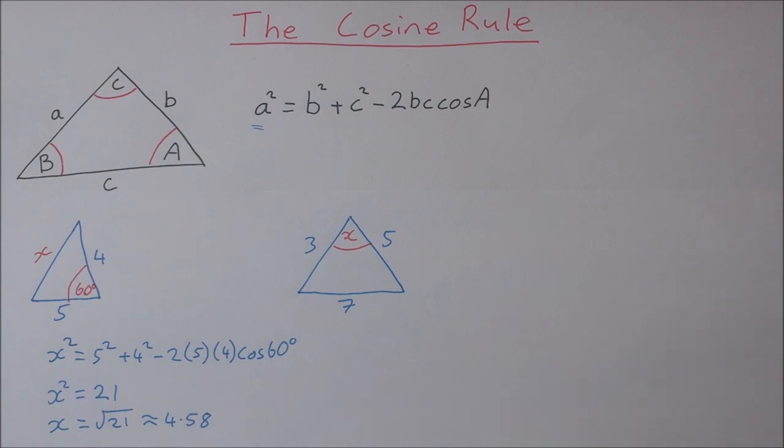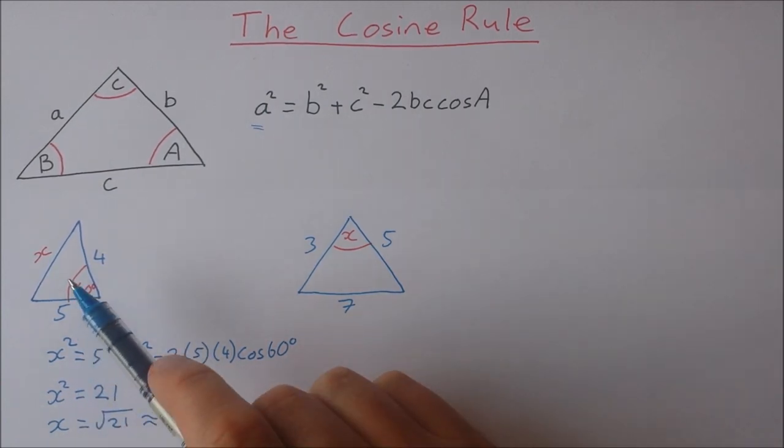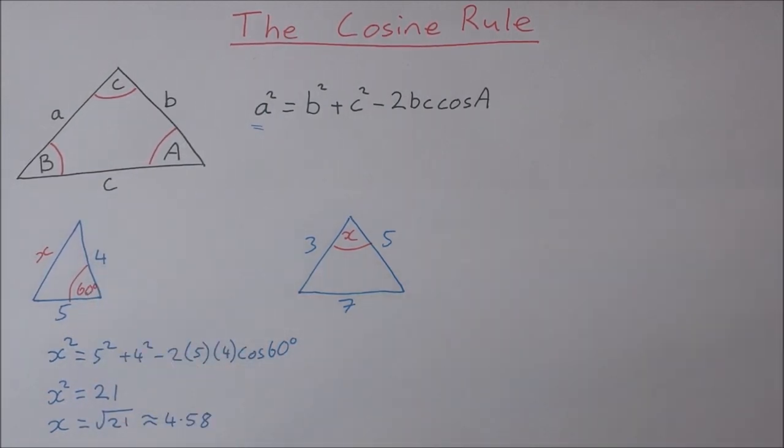So that's how we solve for an unknown side using the cosine rule when we have two sides and the angle between them.